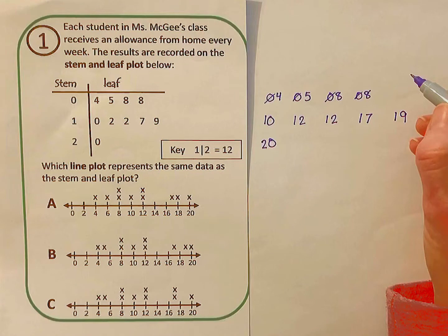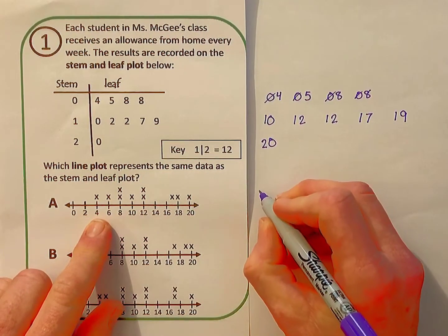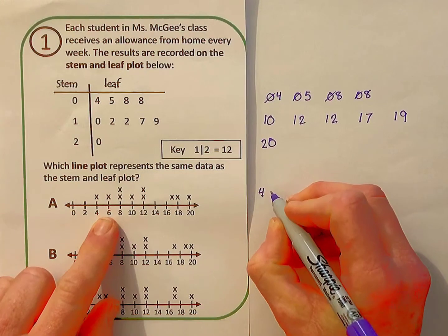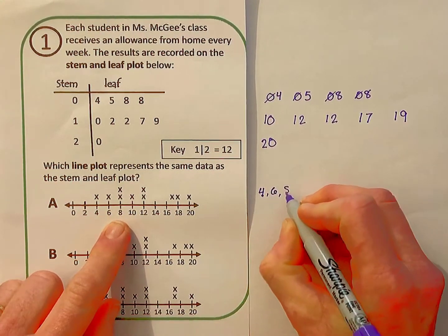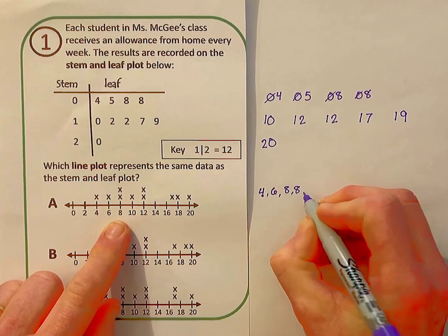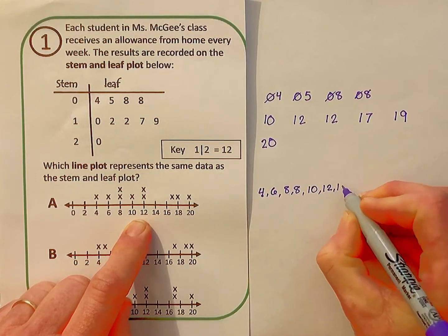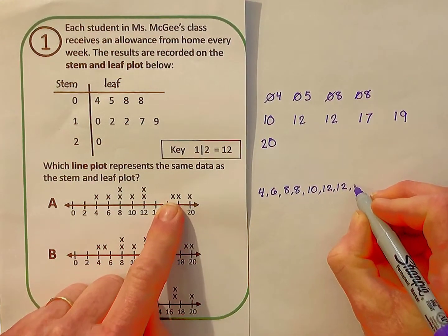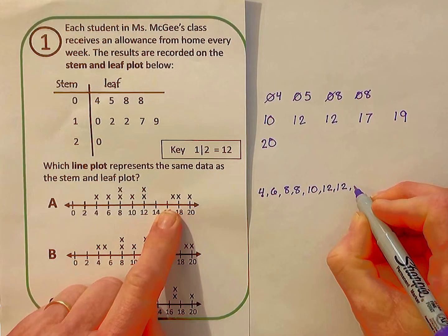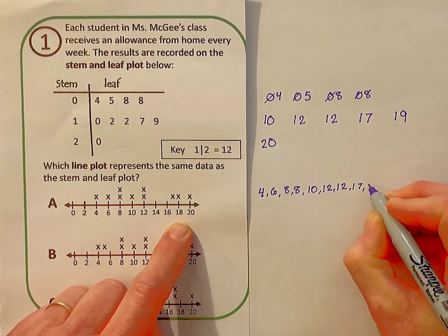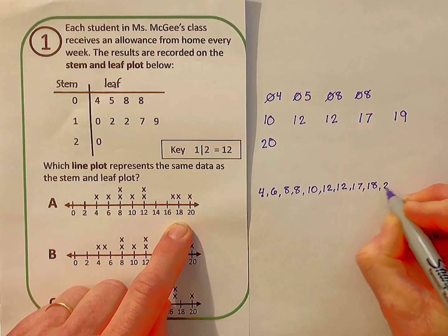The directions say which line plot represents the same data as the stem and leaf plot. Well, let me first write down the numbers represented by each one. Let's start with A. I have the number 4, 6, I have two 8s, 10, two 12s, and over here between the 16 and the 18, that's 17, then 18, and 20.